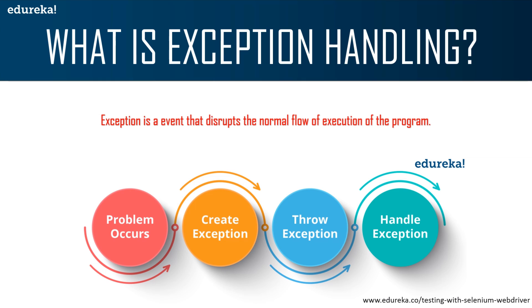The exception object contains a lot of debugging information such as method hierarchy, the line number where the exception occurred, and the type of the exception. When you start working with Selenium WebDriver, you will come across different exceptions based on the code you write. The same code sometimes works properly and sometimes it will not — you will see some exception when you execute your scripts. Exceptions sometimes come as side effects to the scripts we are developing, and that's why handling an exception is very important.